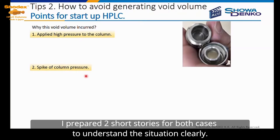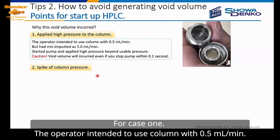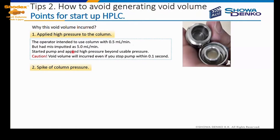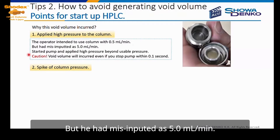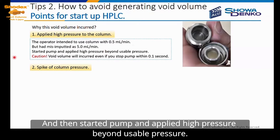I prepared two short stories for both cases to understand the situation clearly. For case 1, the operator intended to use the column at 0.5 ml per minute, but missed the input and set it at 5.0 ml per minute. He then started the pump and applied high pressure beyond the usable pressure.